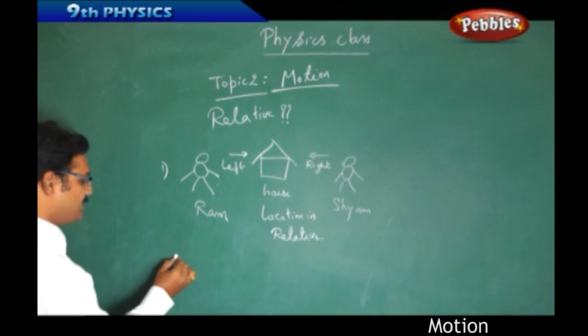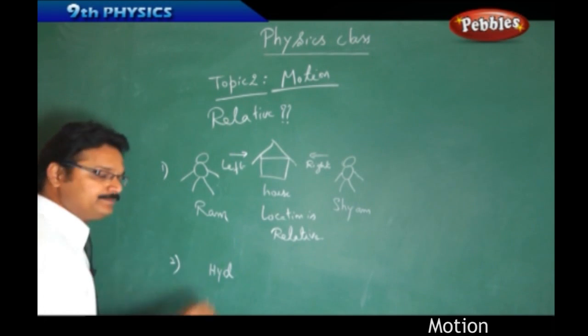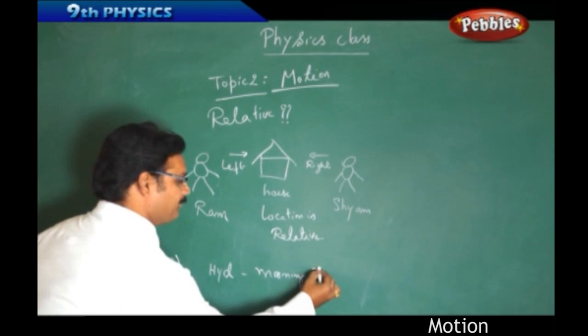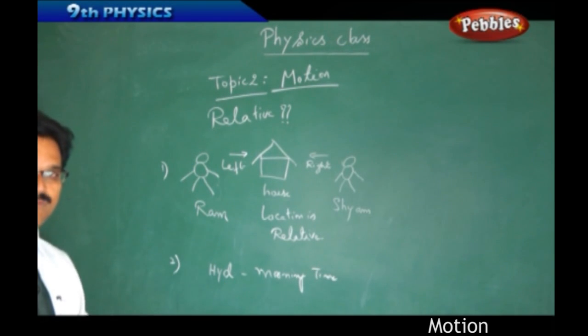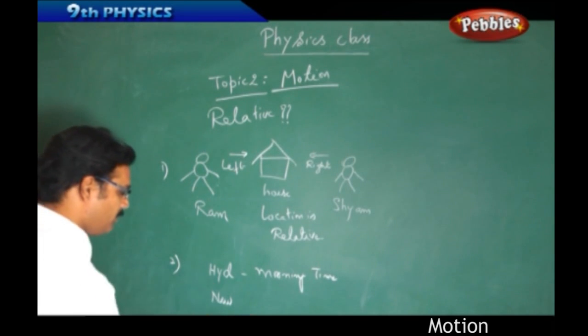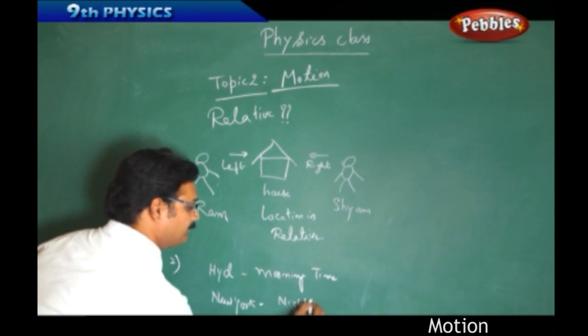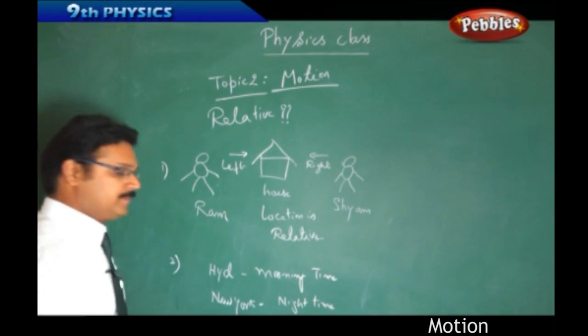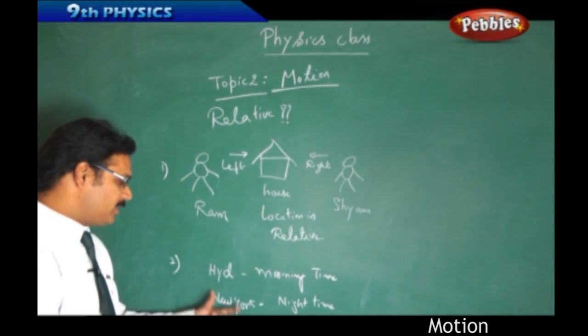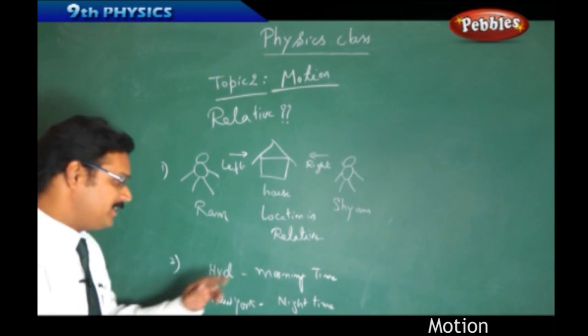Take a second example. Suppose we are in Hyderabad, it is morning time. At the same moment, if your friend or relative is in New York, for him it is night time. Who is correct here? According to Hyderabad, morning time is correct. According to New York, night time is correct. Both are correct because day and night are relative.